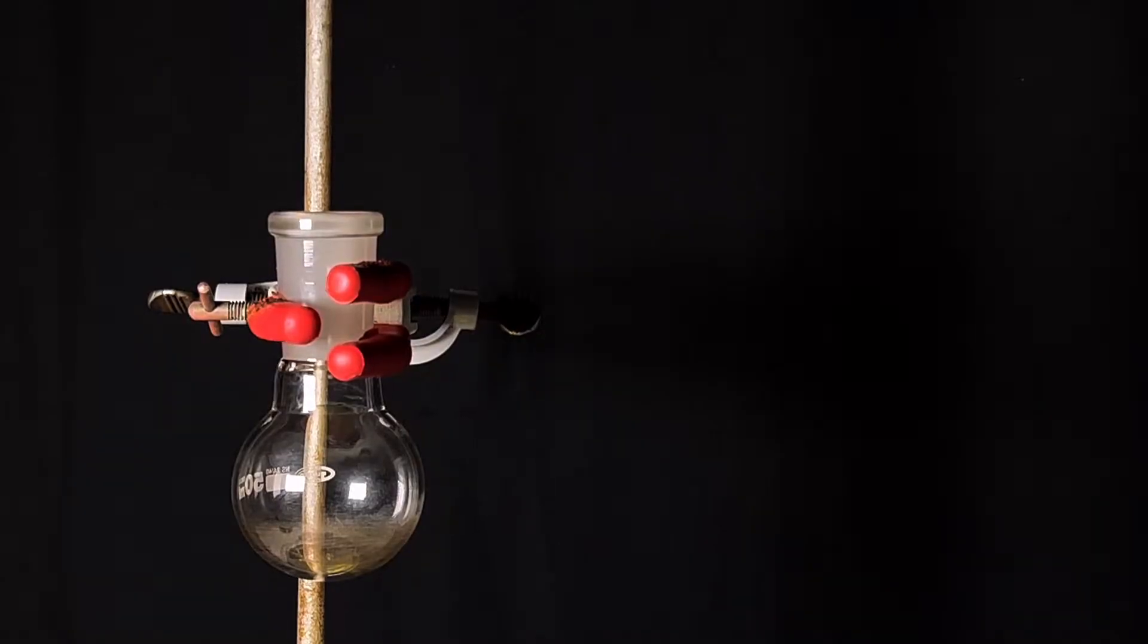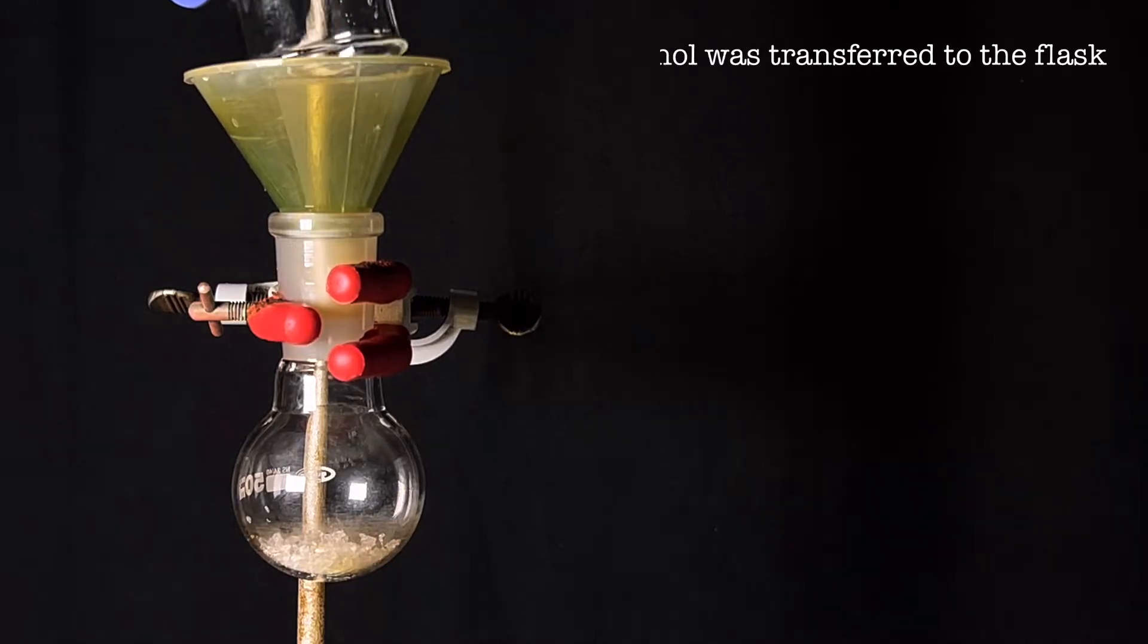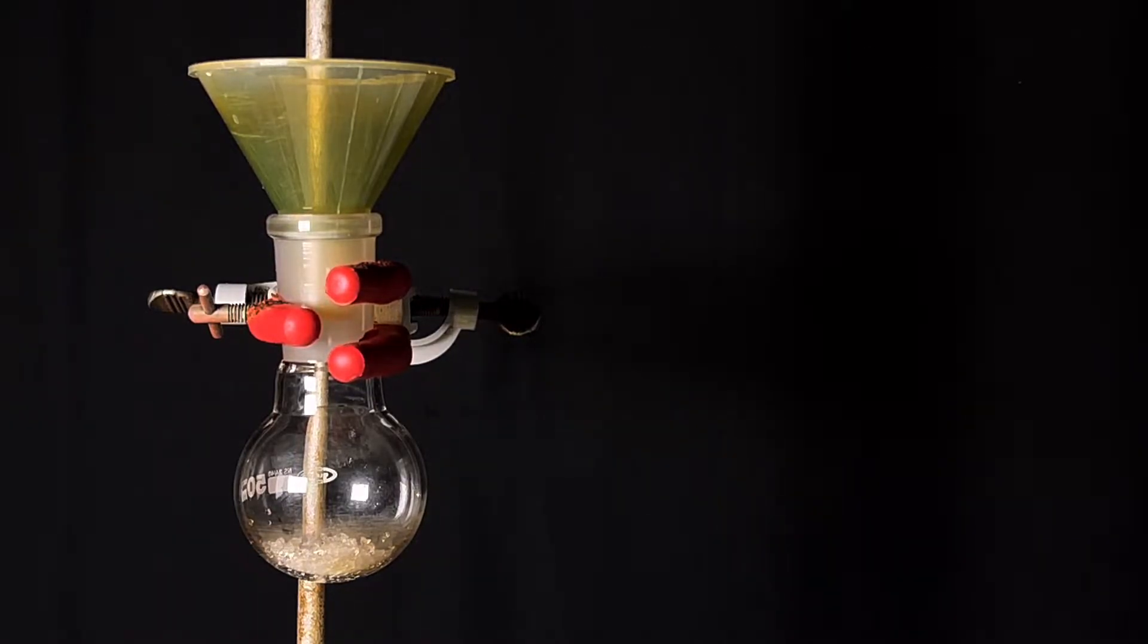Start by fixing a small 50 ml round bottom flask onto an iron stand using a clamp. A small funnel was placed above the round bottom flask and 2 grams of phenol was transferred to the flask. Phenol crystals are extremely corrosive, as a single crystal if it comes in contact with skin for few seconds would cause severe burns.